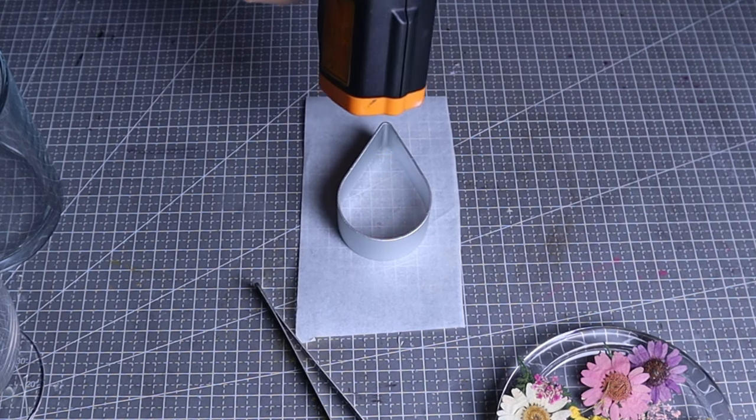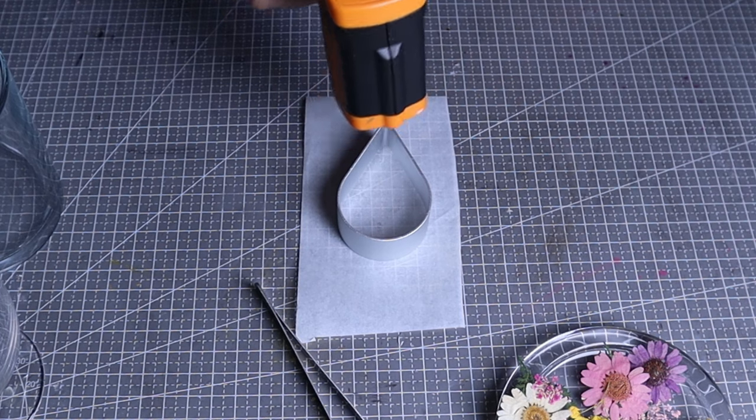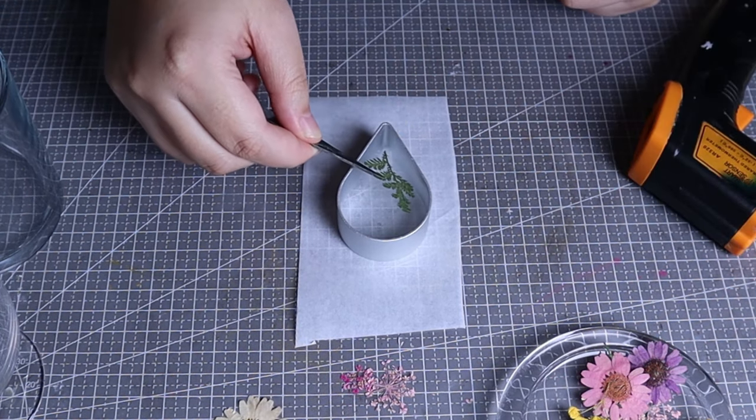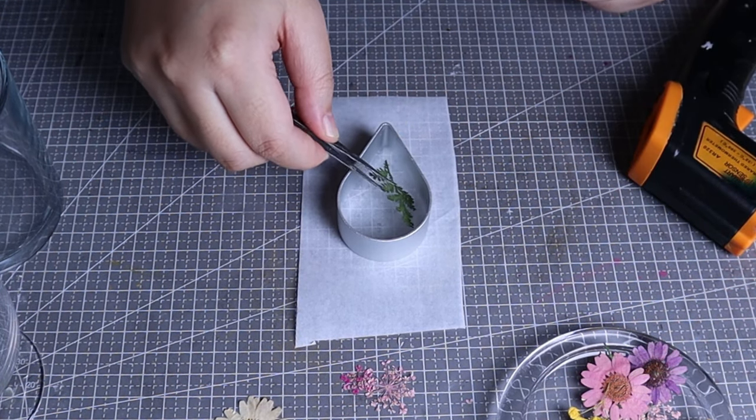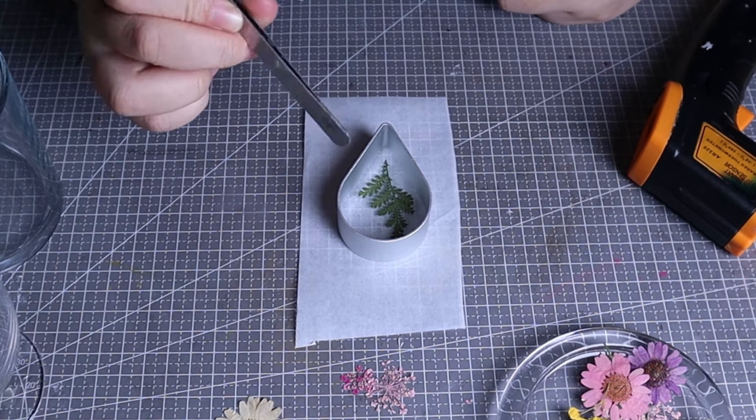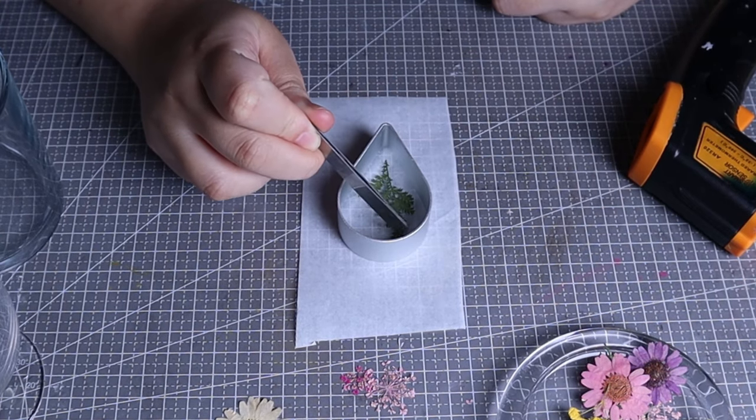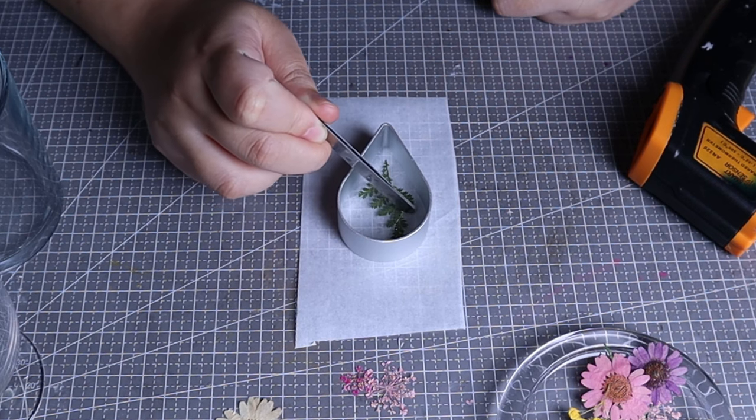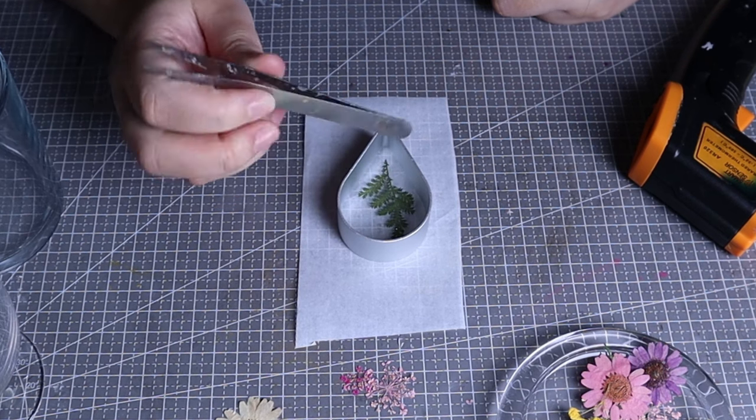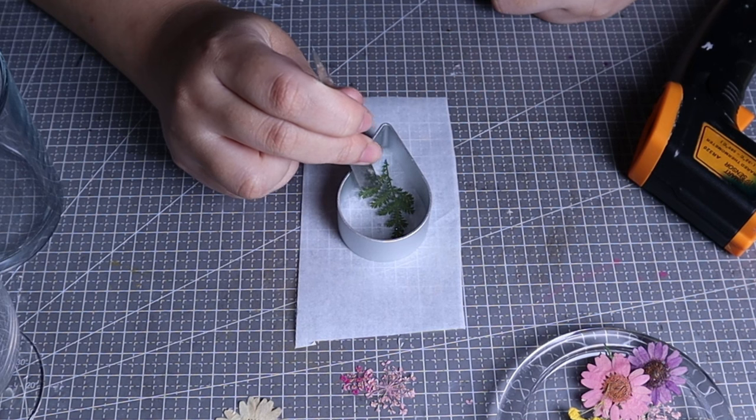When the surface of the wax cools down to 100 degrees Celsius, use tweezers to pick up the pressed flowers and place them on the wax surface. Generally, press the details and contour of the flowers with the tweezers to make them fully adhere to the wax surface. If done properly, the gel wax slice will be basically bubble-free.